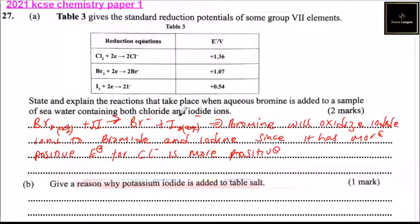And since we are told that the seawater has chlorine and iodide ions, then we can say bromine in aqueous form, you add to chloride ions, there will be no reaction, no reaction.